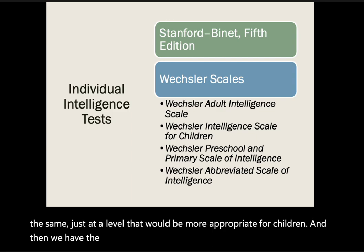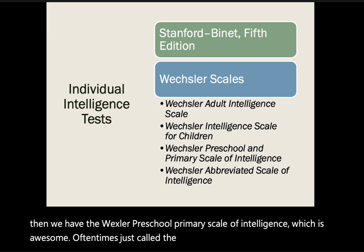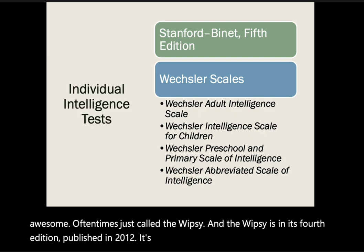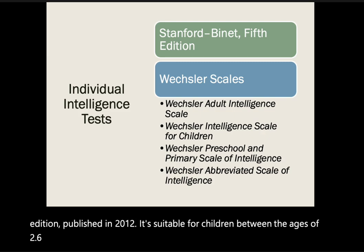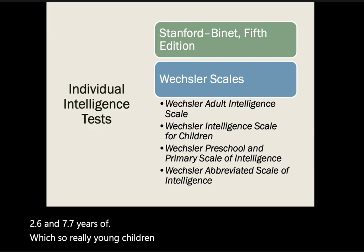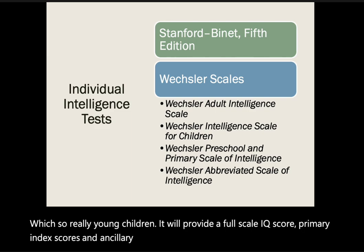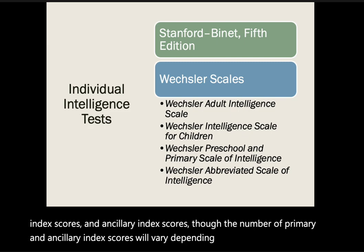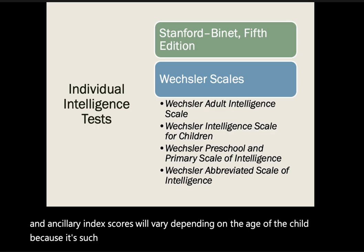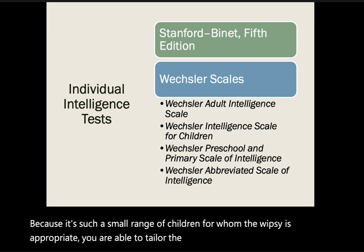The Wechsler Preschool and Primary Scale of Intelligence, or WPPSI, is in its fourth edition published in 2012. It is suitable for children between the ages of 2 years 6 months and 7 years 7 months. It provides a full-scale IQ score, primary index scores, and ancillary index scores, though the number of primary and ancillary index scores varies depending on the age of the child, allowing the assessment to be tailored accordingly.